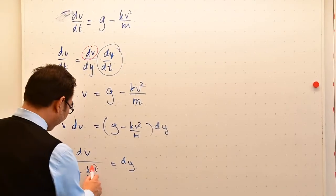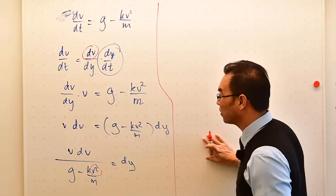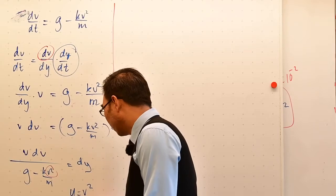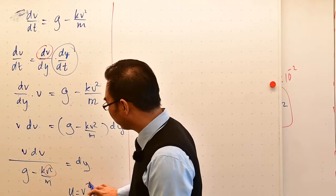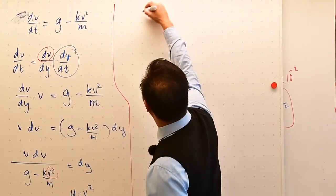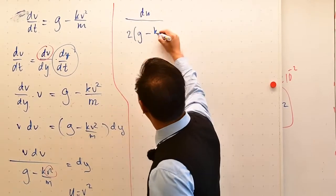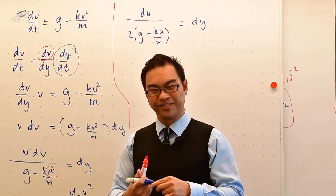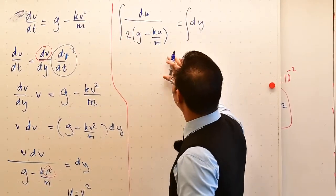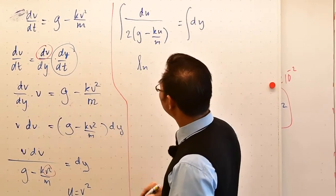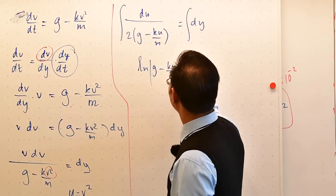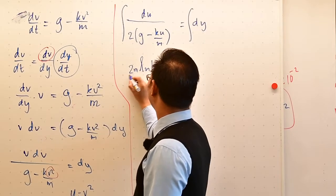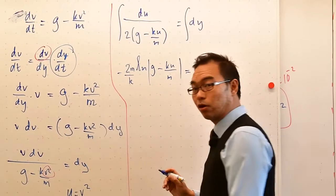To integrate this, it's quite complicated because you have v squared. So we use some trick, and this trick is very standard in mathematics. You just define u as v squared, which is going to lead you to du being 2v dv. Then vdv would be du divided by 2. And you still have g minus k v squared will become u. And this will be dy. What you have to do is to integrate. And if you know calculus, this is not too difficult. You're going to get natural logarithm of g minus ku divided by m. And 2m minus k. And this will be y plus a constant.